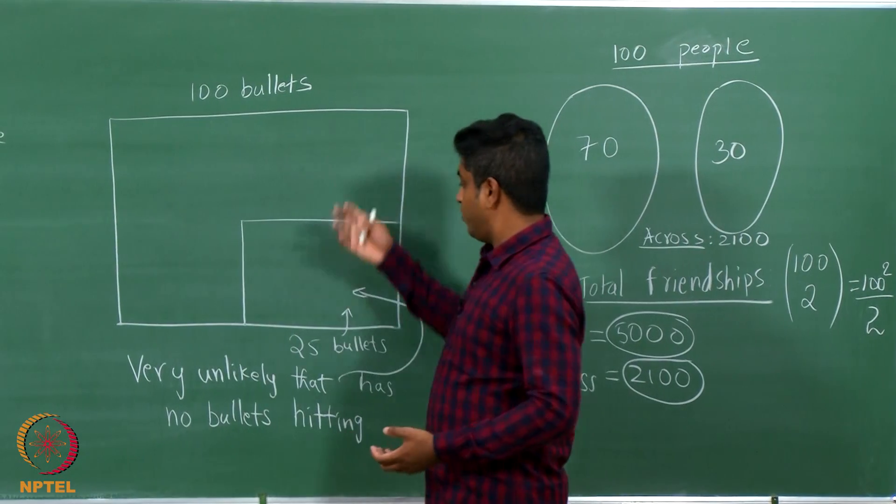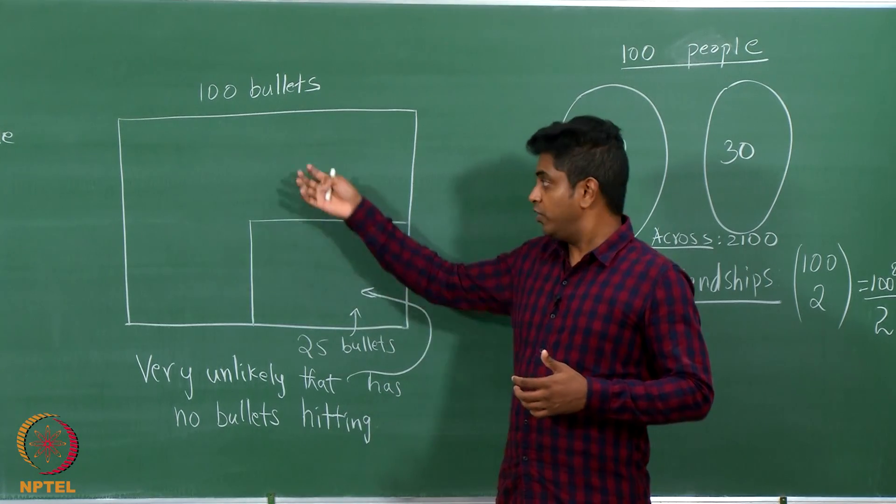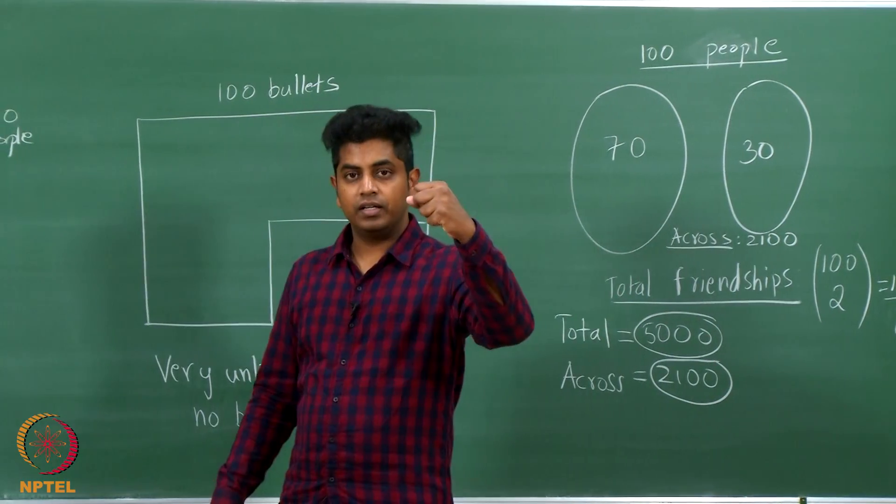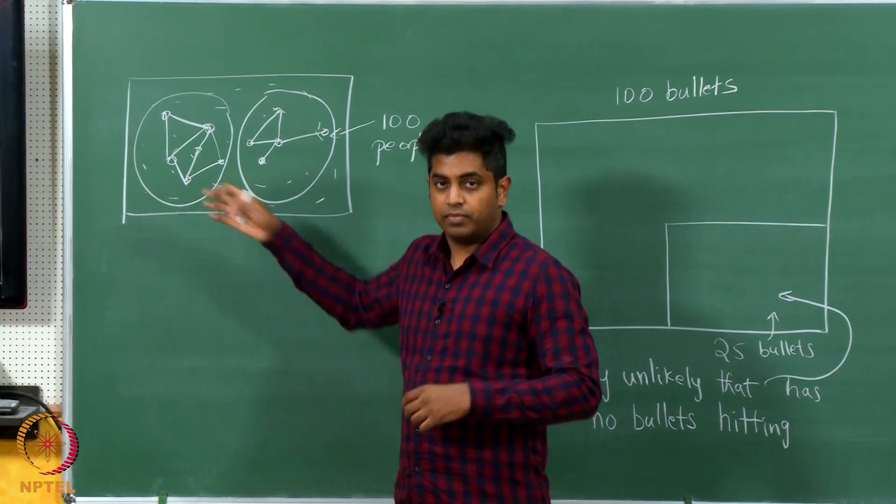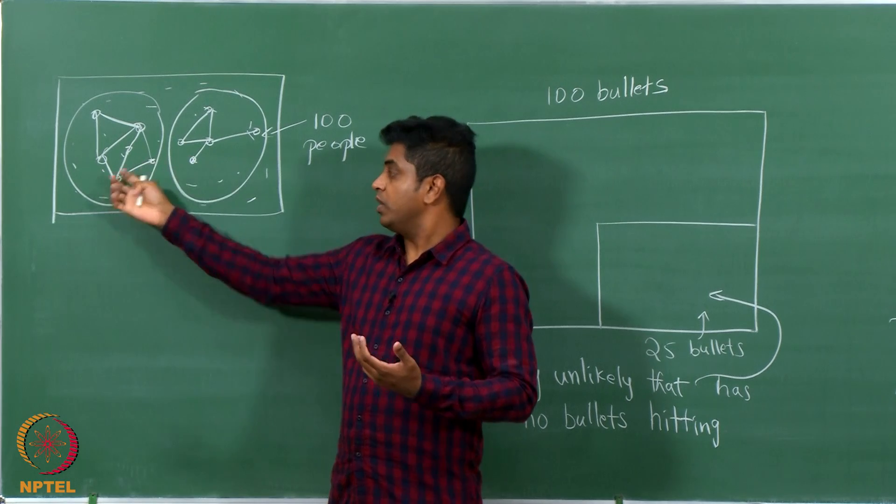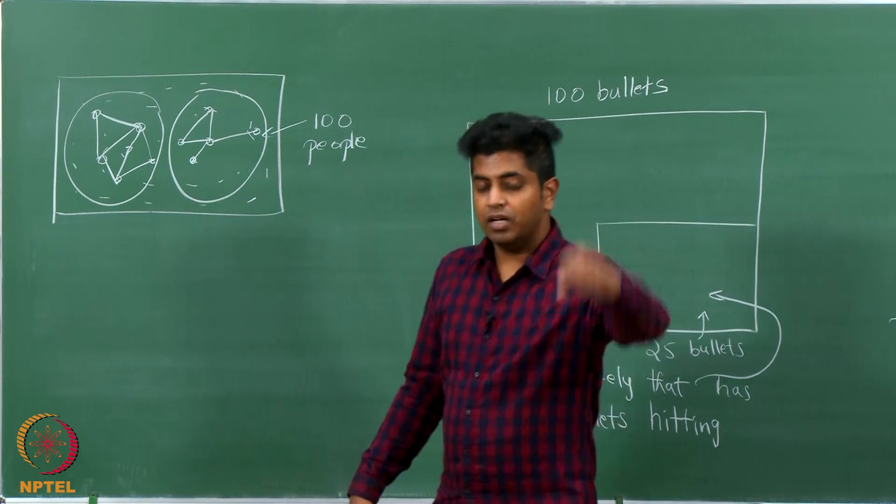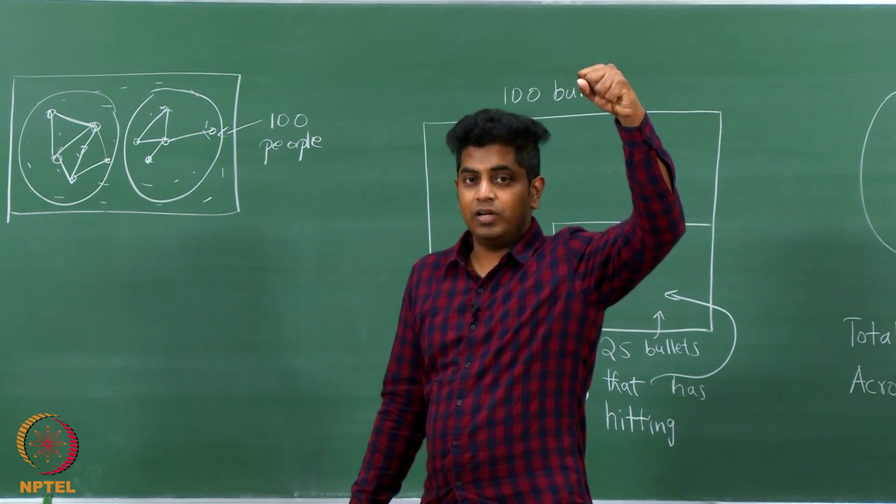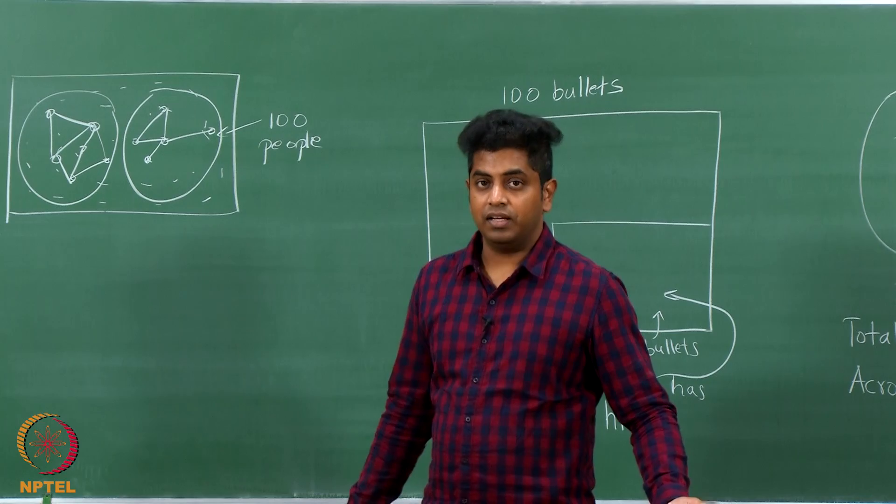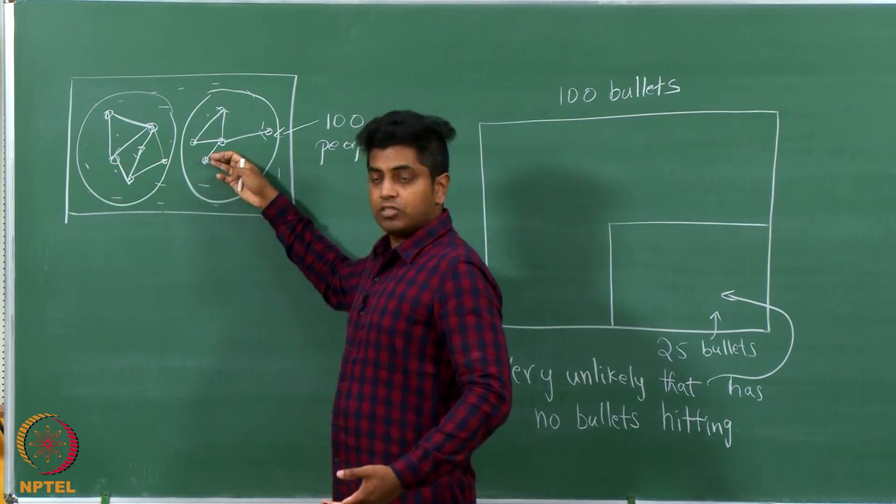I am just using the same argument to say look, this is very unlikely that you have two components. Most of them, out of 5000, half of them are across and you are not choosing even one of them. Same thing here, one fourth of the place is this part and all your bullets are not falling here, it is falling outside this only. That is unlikely. Some bullet should fall here, some ball should be white, some edge should be across. That is the intuition. That when you create a graph you cannot see two compartments like this when you have sufficiently many edges. When you pick one ball it can happen it can be black only. Second ball can be black only. When you pick some 50 balls all of them being black is very unlikely. So when you put a lot of edges, all these edges being within only is very unlikely.